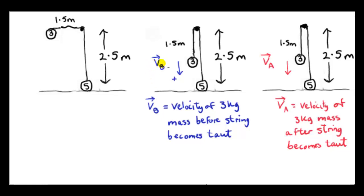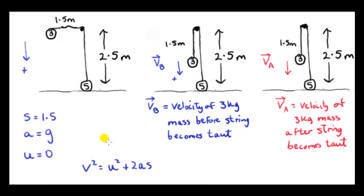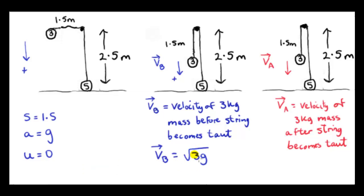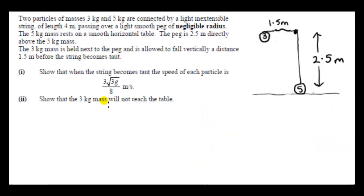We'll start with the easy bit: calculating VB. The 3 kg mass is dropped from rest, so initial velocity is 0, acceleration is g (downwards positive), and the distance s is 1.5 m. Using v² = u² + 2as gives VB² = 0 + 2 × g × 1.5 = 3g, so VB = √(3g). As you can see, the answer we're looking for is quite different, so let's see how this comes about.